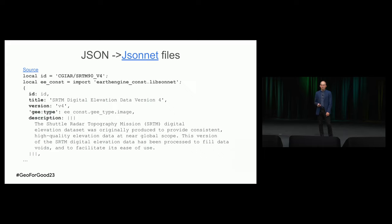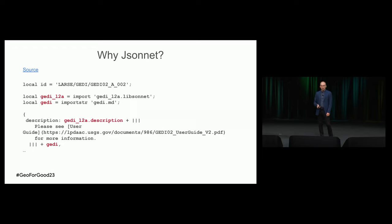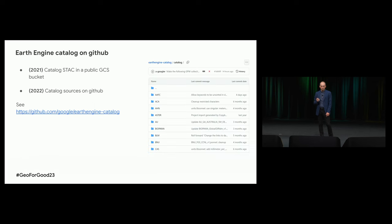We started working with STAC two years ago, initially putting our descriptions in this format, which gave us nice things like the ability to use external browsers like STAC Browser. Then we moved to JSON.NET files, which are more complicated. JSON.NET is a programming language for producing JSON files — it has imports, conditionals, and loops. It lets us write dataset descriptions in a convenient way so we can encode fields once and not worry about them getting out of sync. For example, we have a number of GEDI datasets where common text is shared across descriptions.